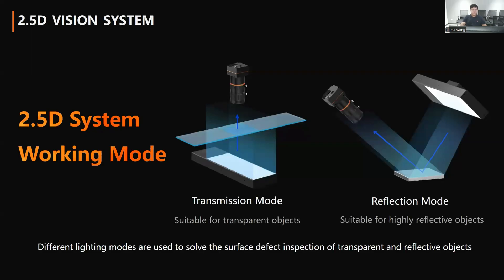There are two working modes in the 2.5 dimension system. The first is transmission mode, which is suitable for transparent objects. The second is reflection mode, which is suitable for highly reflective objects.